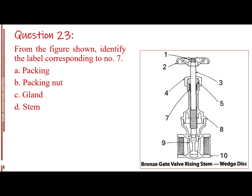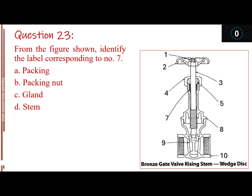Question number 23. From the figure shown, identify the label corresponding to number 7. Letter A, packing. Letter B, packing nap. Letter C, gland. Letter D, stem. The answer is letter A, packing.